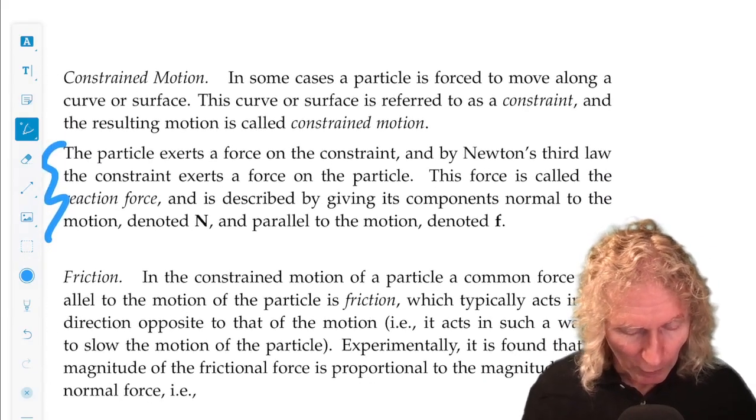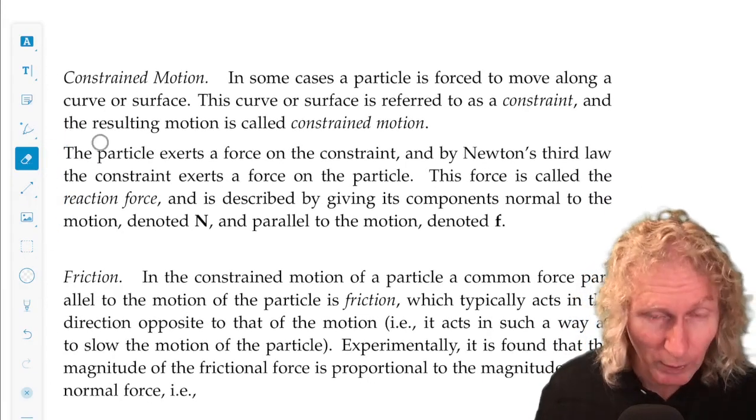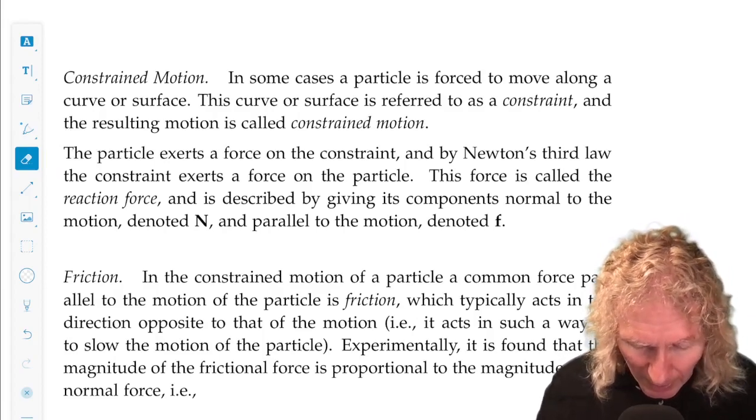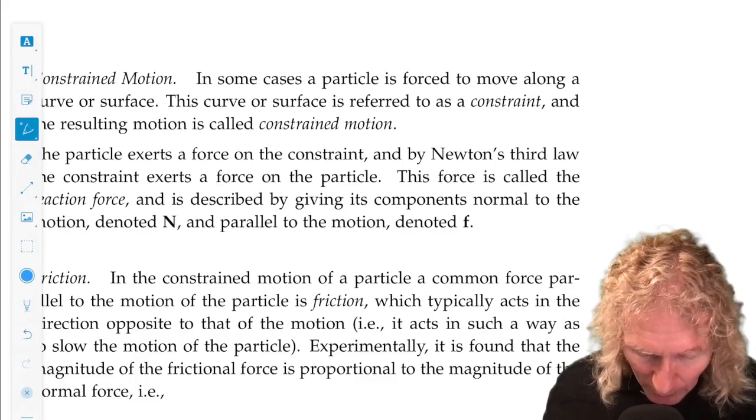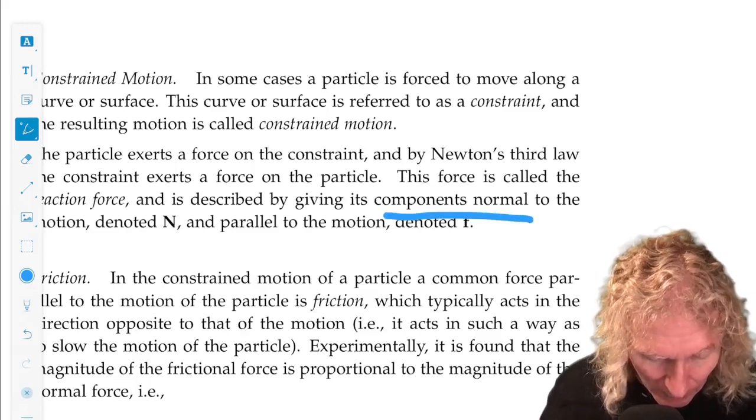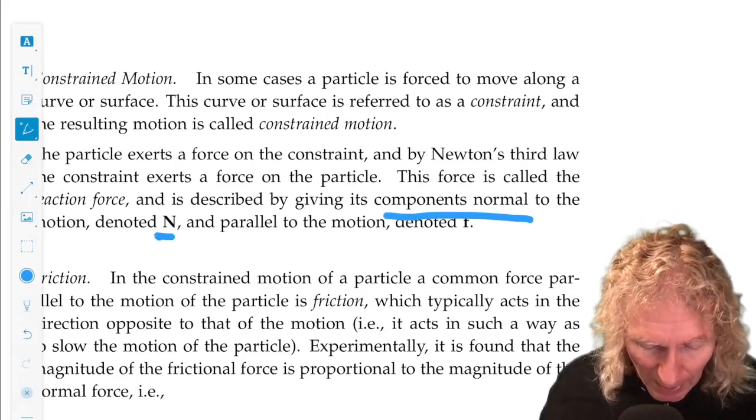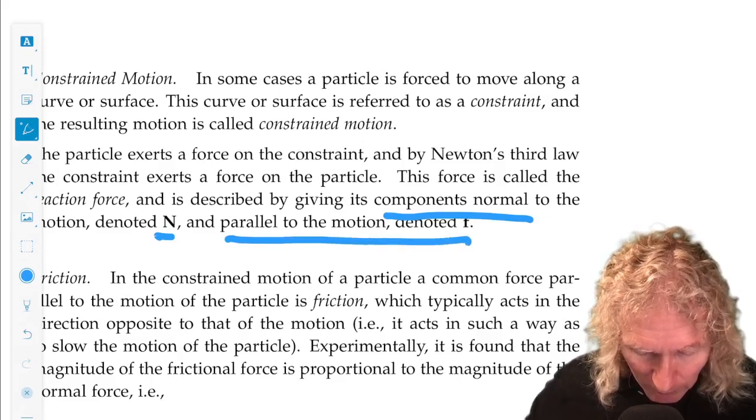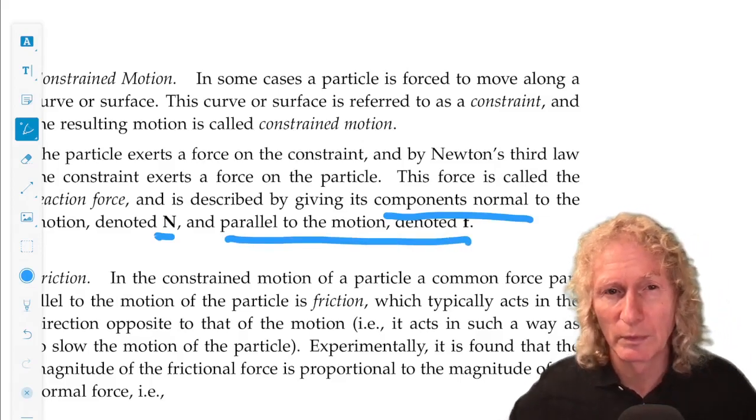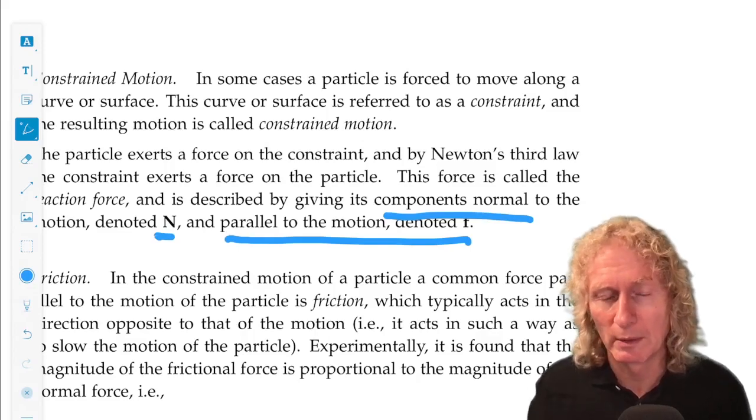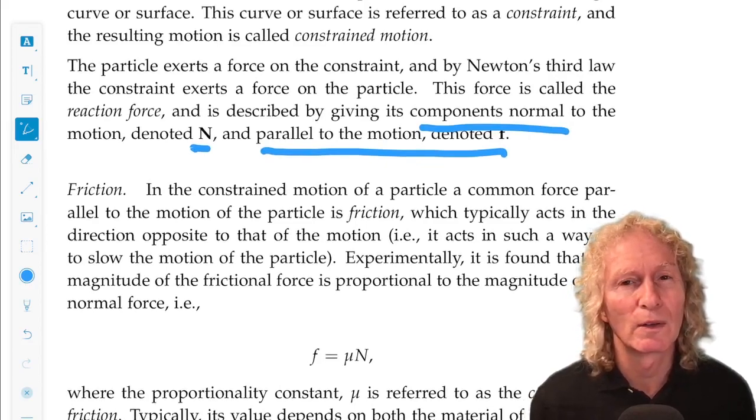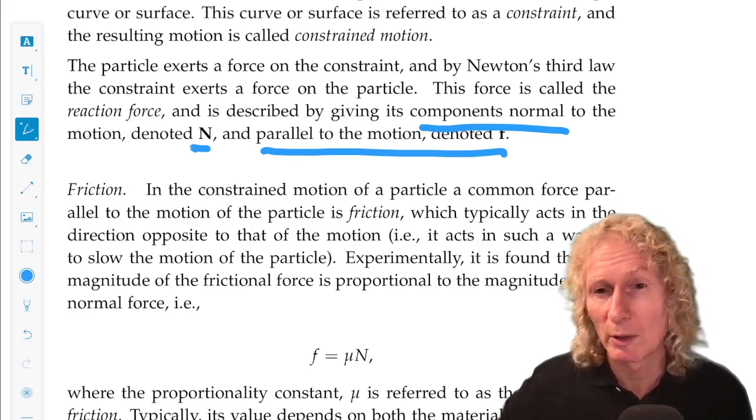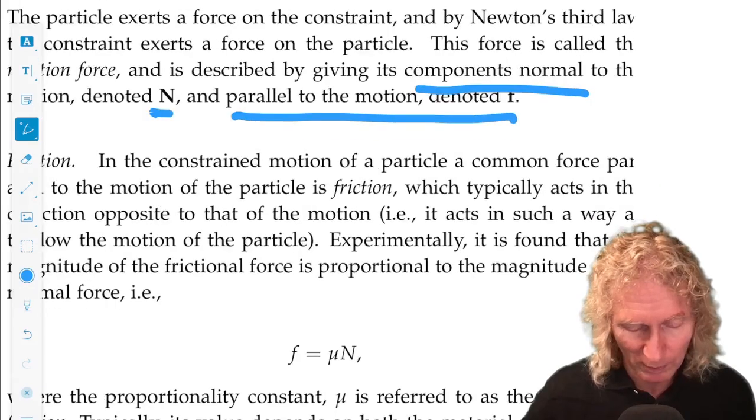This force is called the reaction force, the reaction of the constraint on the particle. And we break it up into two components. One is a normal component, a component normal to the motion, we call it N. And a part parallel to the motion, we'll call that F. And we can always do that. We can break up the vector however we want. And thinking about that coordinate system early on, special specific to a space curve, the tangent, the principle normal, the binormal. That'll give you a good idea of how that might be used in this case.